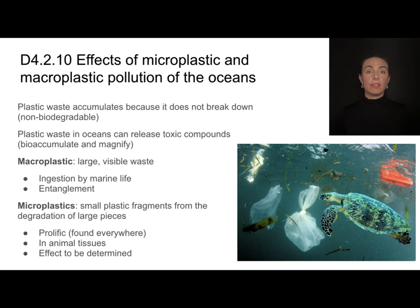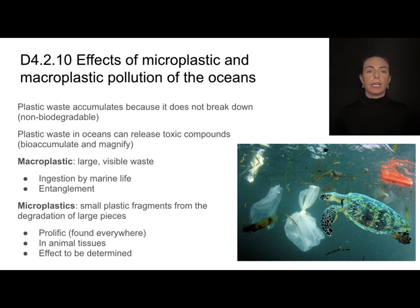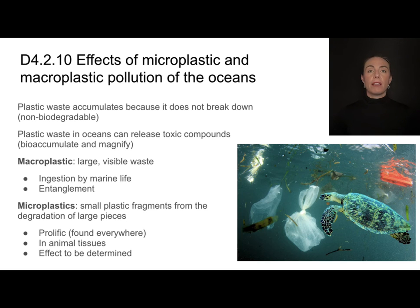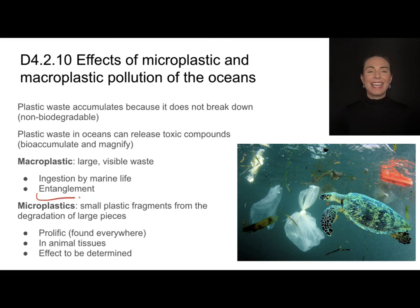We know pollution affects the sustainability of ecosystems. Looking particularly at oceans and the effect of plastics: plastic tends to accumulate because it does not break down — it's not biodegradable. Plastic waste in oceans can release toxic compounds that bioaccumulate throughout an organism's lifetime and magnify further up the food chain. Plastic pollution can be divided into two categories. Macro plastics are large, visible plastic waste — like a plastic bag — which organisms could ingest thinking it's food, disrupting their digestive systems, or become entangled in.